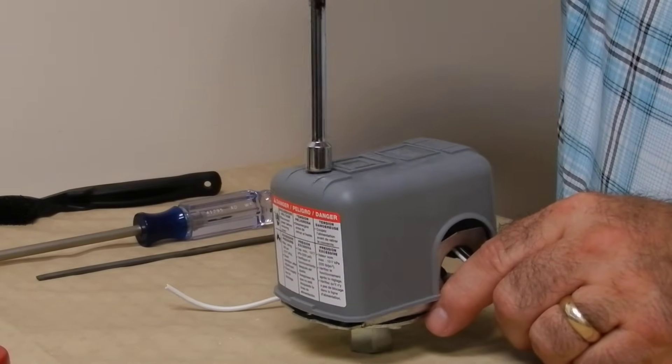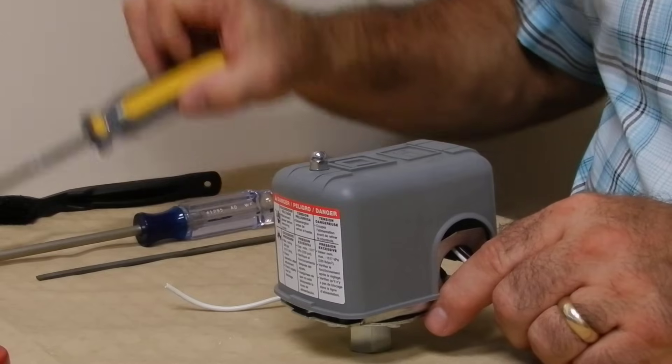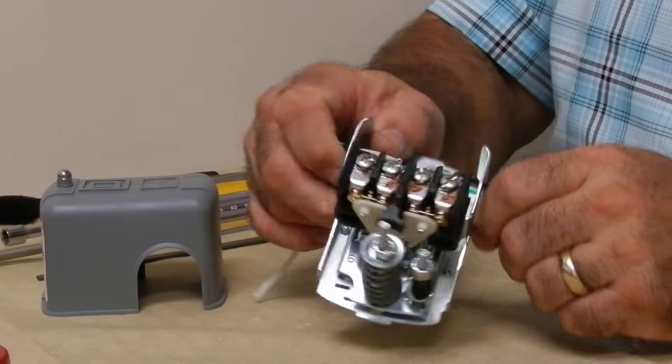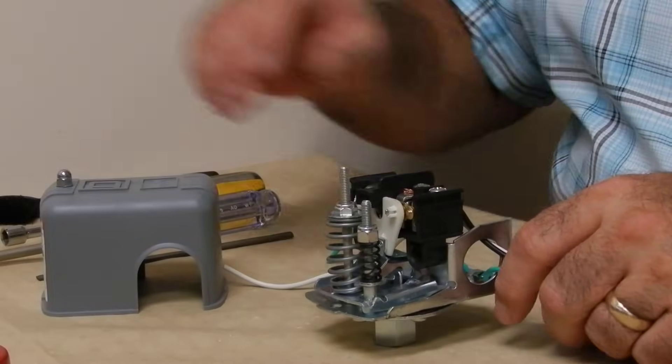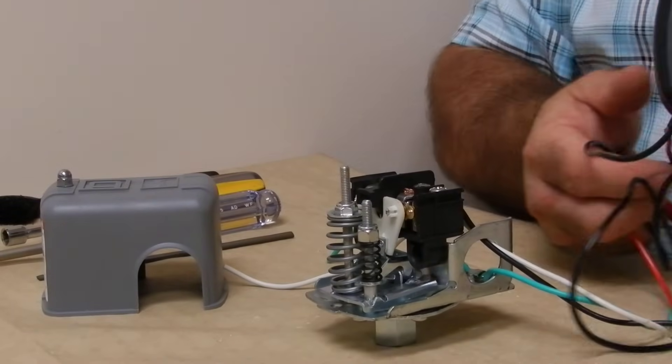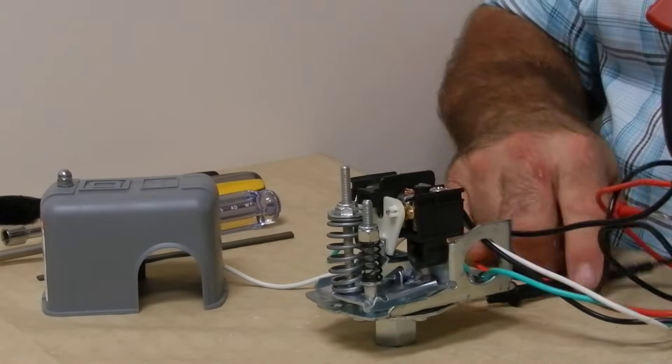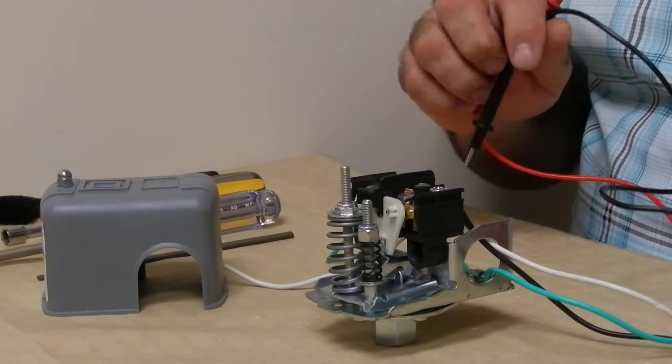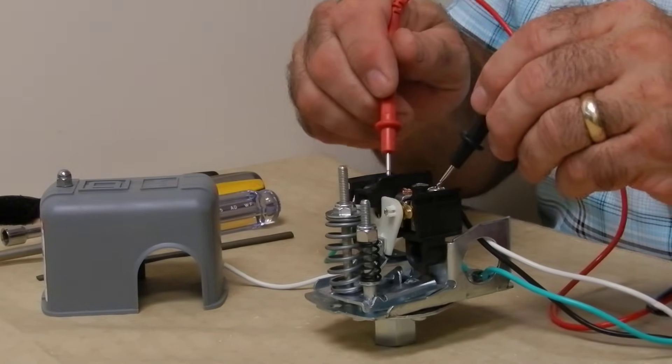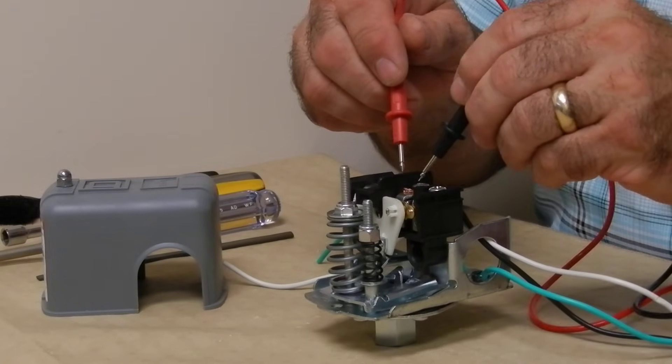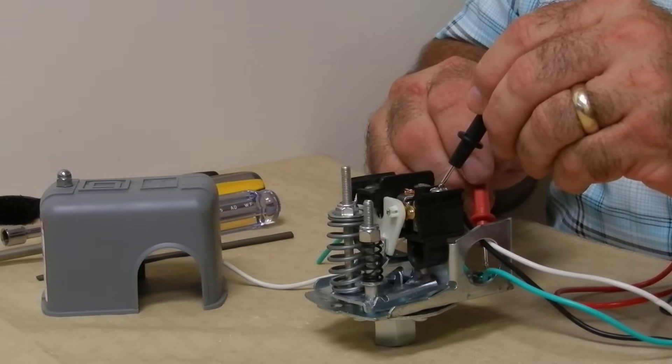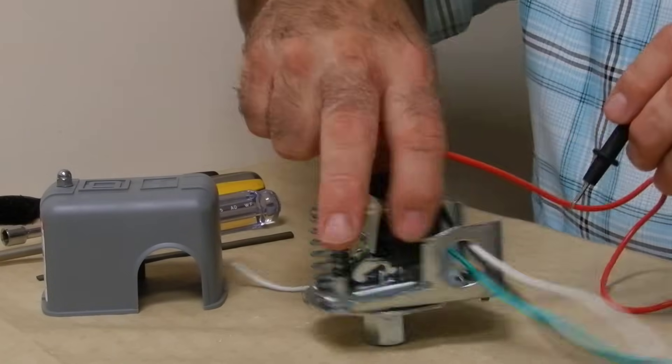Remove the lid. Inside you will see four electrical connections. Make sure the power is off by using a small electrical test meter to test for AC voltage. Check across the outside terminals, the inside terminals, and then each terminal to ground, like this.